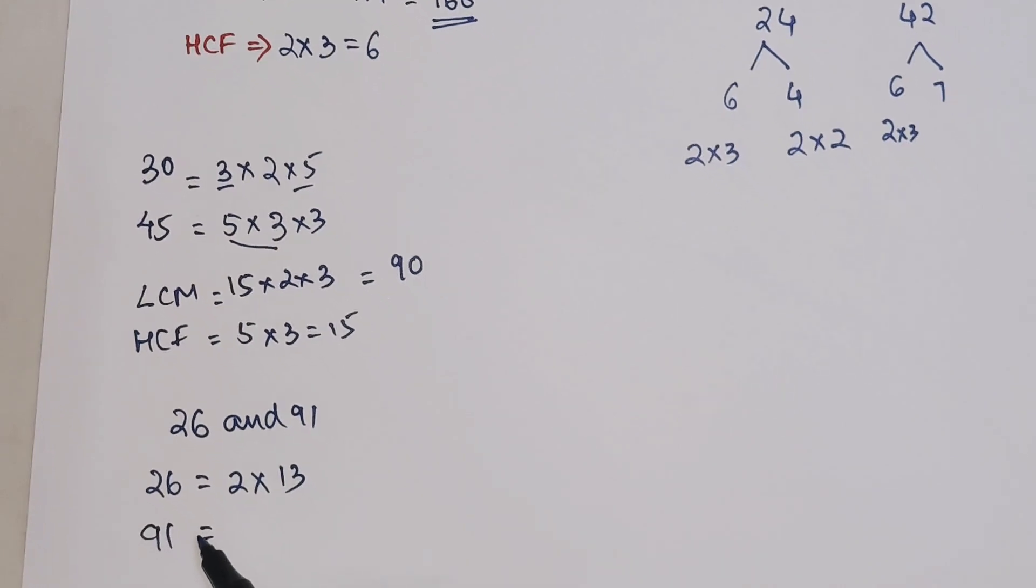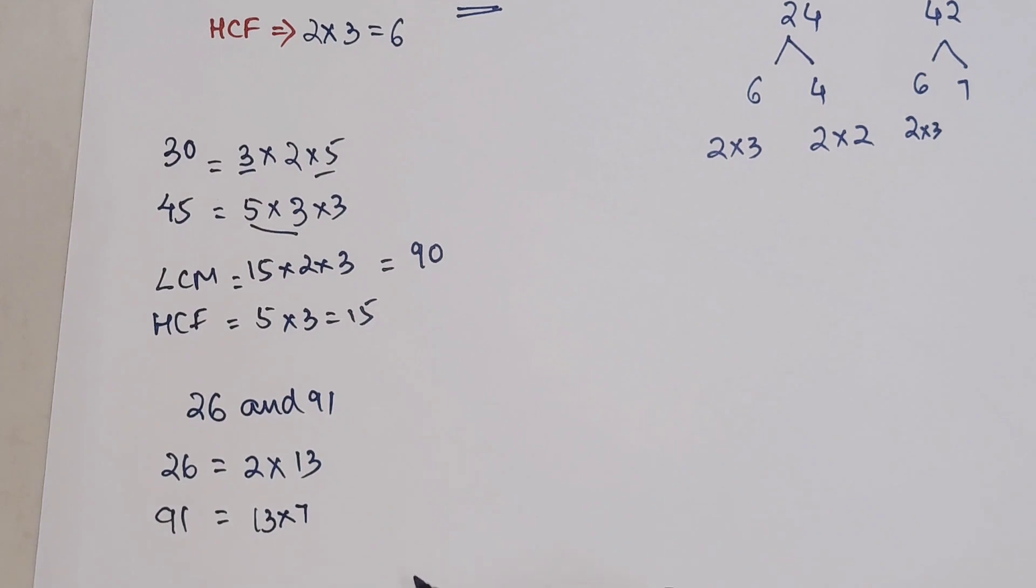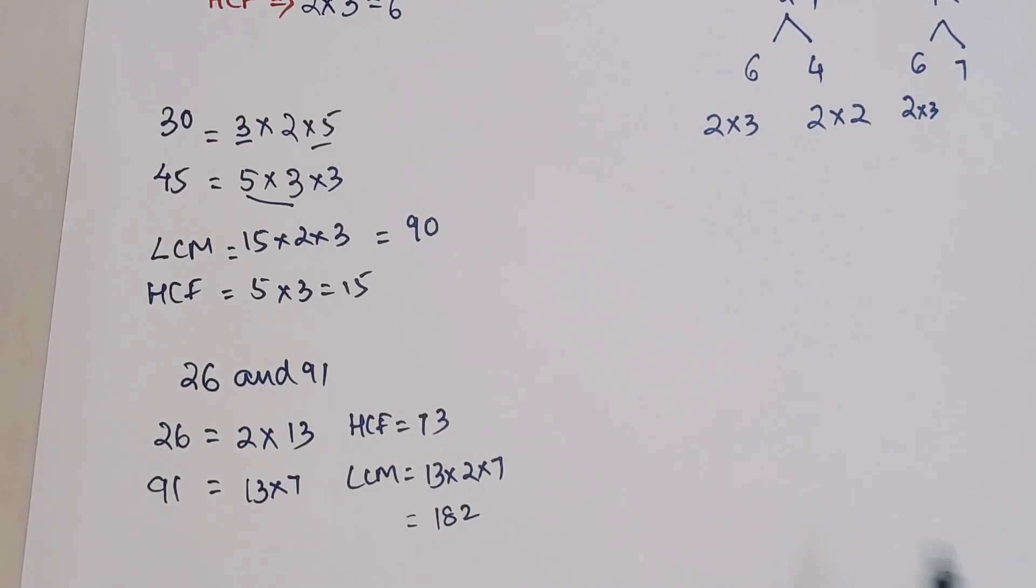For 91, this doesn't go in 2 table, 3 table, so we will check with 13 if it is going. You will see 13 into 7 gets you 91. So in this case your HCF becomes 13, and your LCM will become 13 into 2 into 7. I hope you all are getting this idea. This is 182.